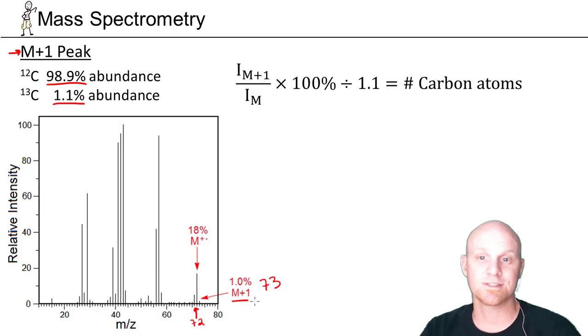Now, the likelihood of getting one of those carbons is not very high. So per carbon, it's 1.1%. If you have two carbons, it'd be 2.2%. Three carbons, 3.3%. Four carbons, 4.4%, so on and so forth.